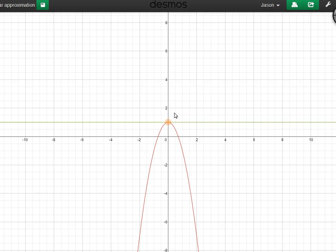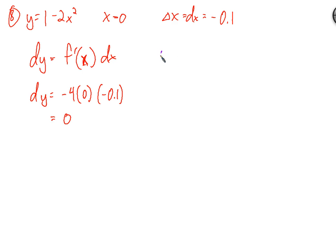And why is that? This is y equals 1 minus 2x squared, and this is the tangent line at x equals 0. So the dy is going to be 0. So let's see what the actual delta y is going to be. To find the actual change in y, delta y.